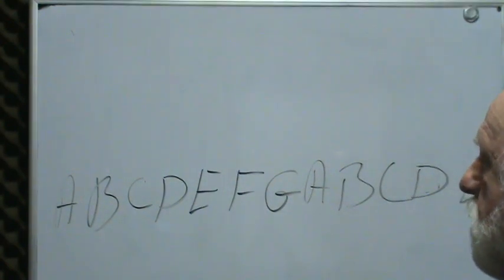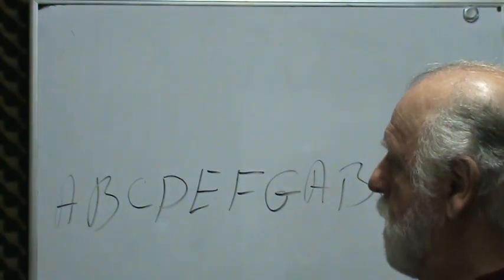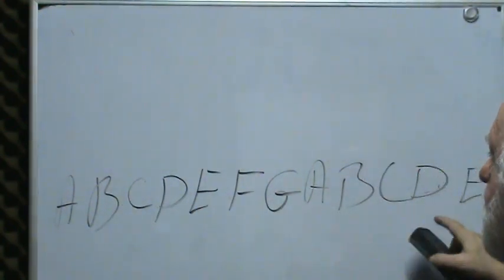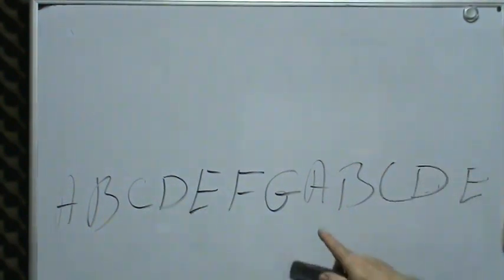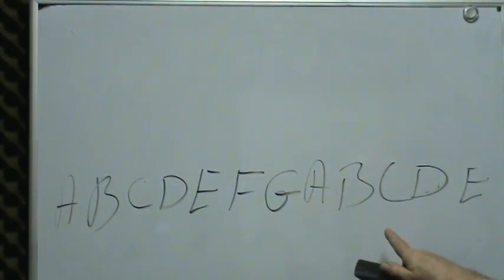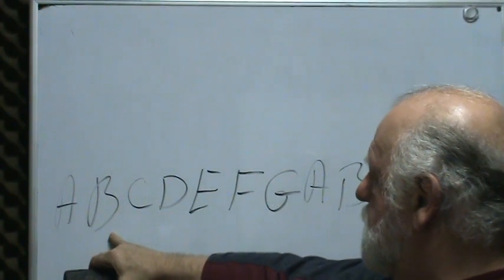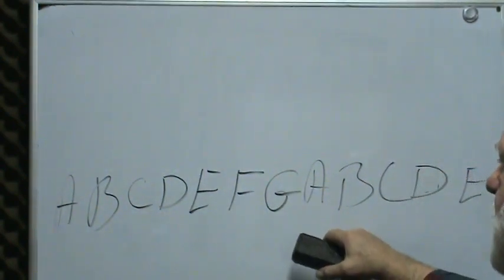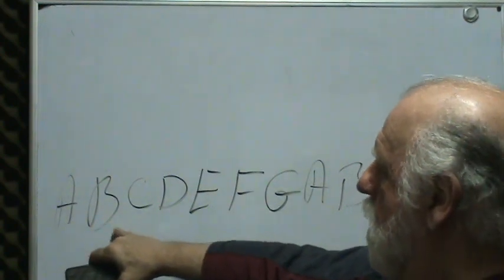Now, the other thing you can do with the musical alphabet is you can start anywhere in it. Since it just repeats anyway, no matter where you start, if you start with B, C, D, E, F, G, A, B, you could start with B and go to B.